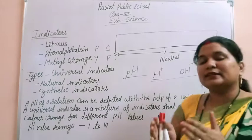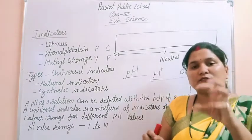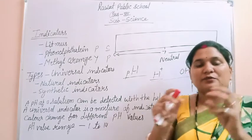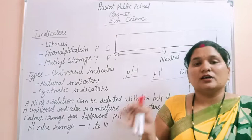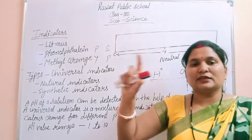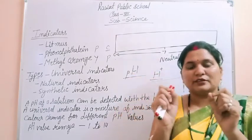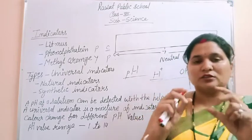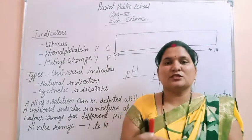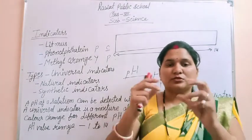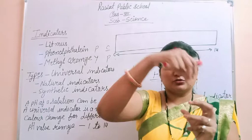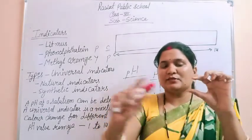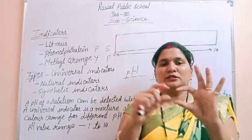A universal indicator is a mixture of different indicators that gives a different color change for different pH values. If you look in the book, you will see a scale of different colors. We add the universal indicator to the solution, observe the color it turns, and then match that color on the pH scale to read the pH value.